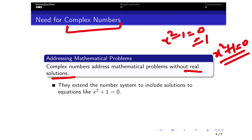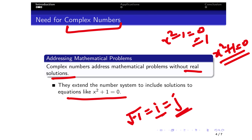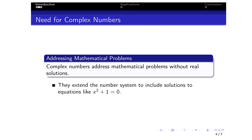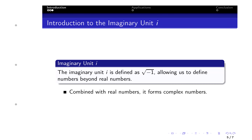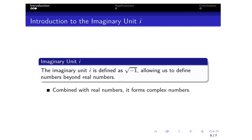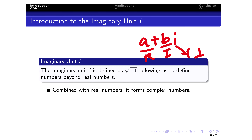Complex numbers extend the number system to include solutions to equations like x² + 1 = 0. The square root of minus one equals i (for mathematicians and physicists) or j (for electrical engineers, who use i for current). The imaginary unit i is defined as √(−1), allowing us to define numbers beyond real numbers. Combined with real numbers, it forms complex numbers, where a complex number is written as a + bi, with a as the real part, b as the imaginary part, and i as the imaginary unit.